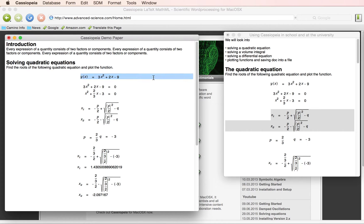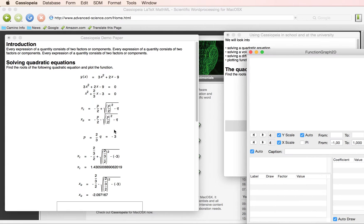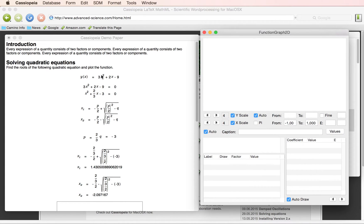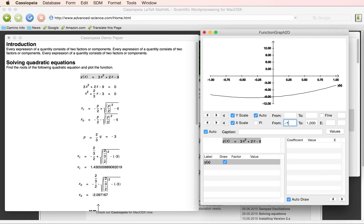We might also want to plot this function. So simply insert a function graph and drag the function onto the text view here, and change some limits to get a nice plot.